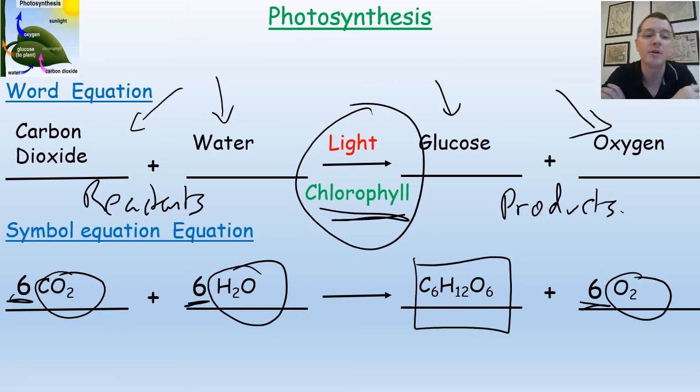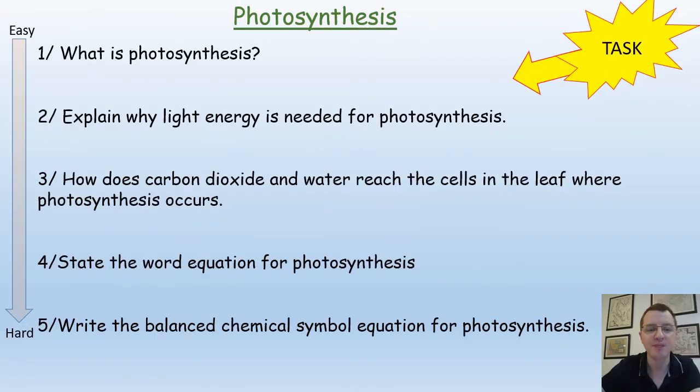So the balanced symbol equation is 6CO2 plus 6H2O gives C6H12O6 plus 6O2. 666. So pause the video again, we've got five questions here for you to try out and we'll go through the answers in a moment.